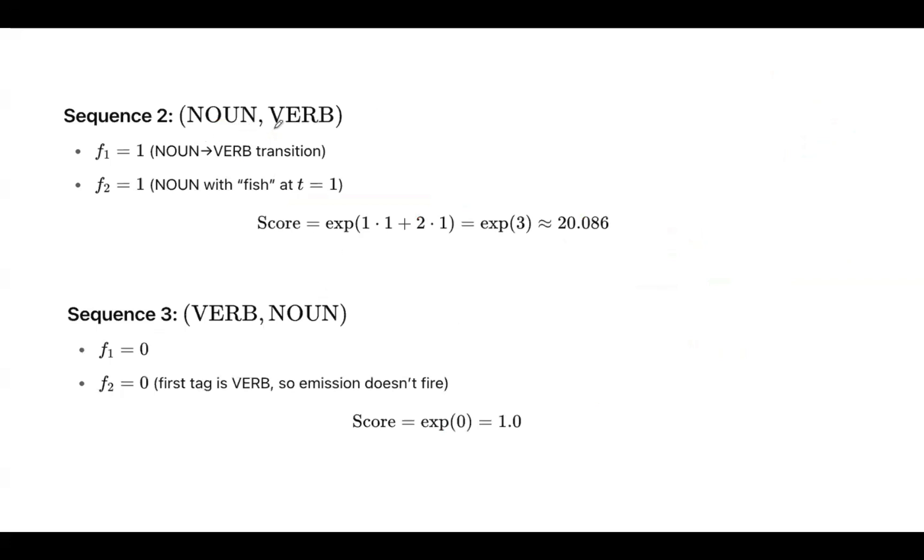For sequence 2, noun comma verb. According to our first feature, there is noun to verb transition, so that value remains 1. At the same time, noun with fish at time t equal to 1, so that value becomes 1.